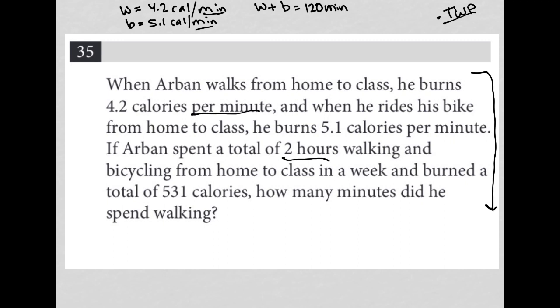So Arban spent a total of two hours walking and bicycling from home to class in a week and burned a total of 531 calories. Okay, well, how do you burn the calories? Well, however much time you're walking, you multiply that by 4.2. Or however many minutes you're walking, you multiply by 4.2. However many minutes you're bicycling, you multiply that by 5.1. And you get the total number of calories. So 531.